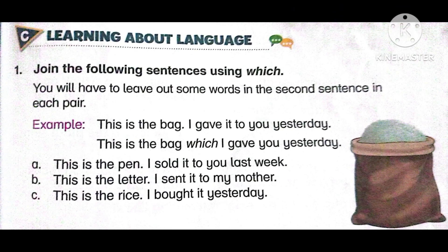The next section is Section C: Learning about Language. Question number one: Join the following sentences using 'which'. You may have to leave out some words in the second sentence of each pair. Example: 'This is the bag. I gave it to you yesterday.' becomes 'This is the bag which I gave you yesterday.' Here 'it to' was removed. Three sentences are given.